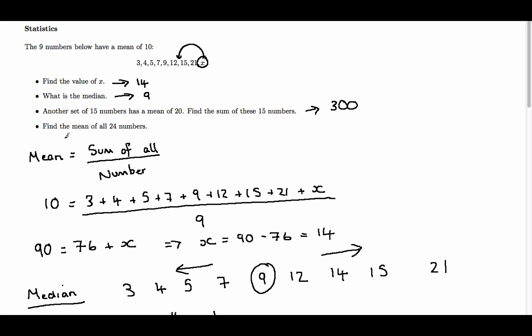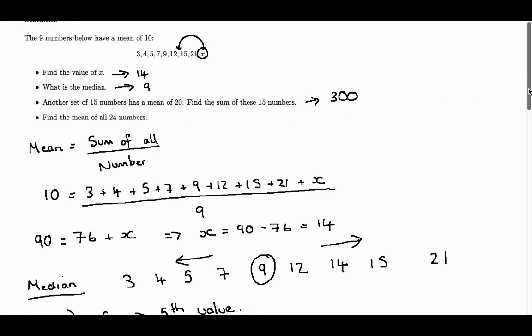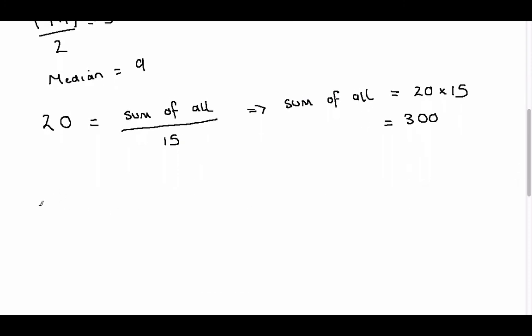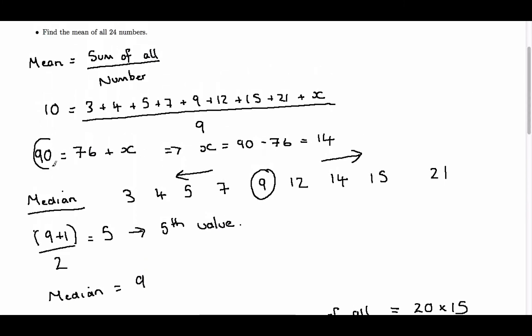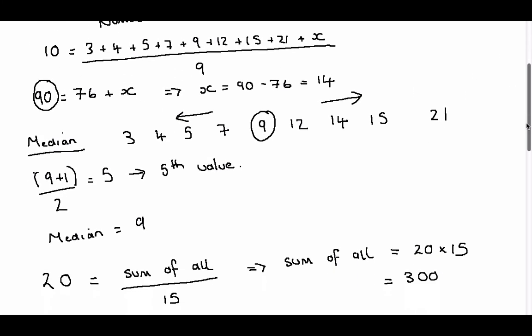So finally, we've been asked to find the mean of all 24 numbers. So again, the mean is the sum of all of them over the number there. Now for this example, we knew from the beginning that the sum of all of them of the first set was 90.